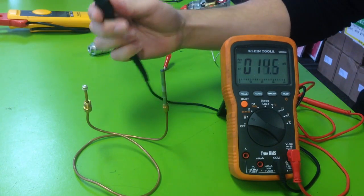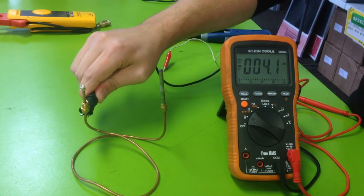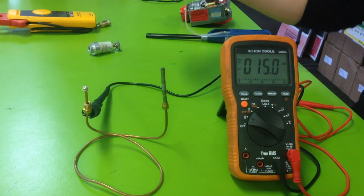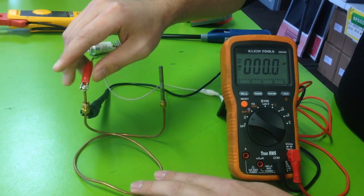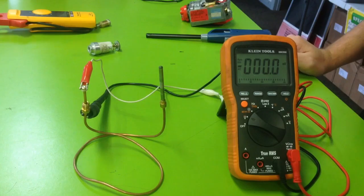You're going to take the common ground, the black lead, hook it to the copper of the thermocoupler. Then you're going to take the red and hook it to the top. You can see it zeroed out real quick there for me.